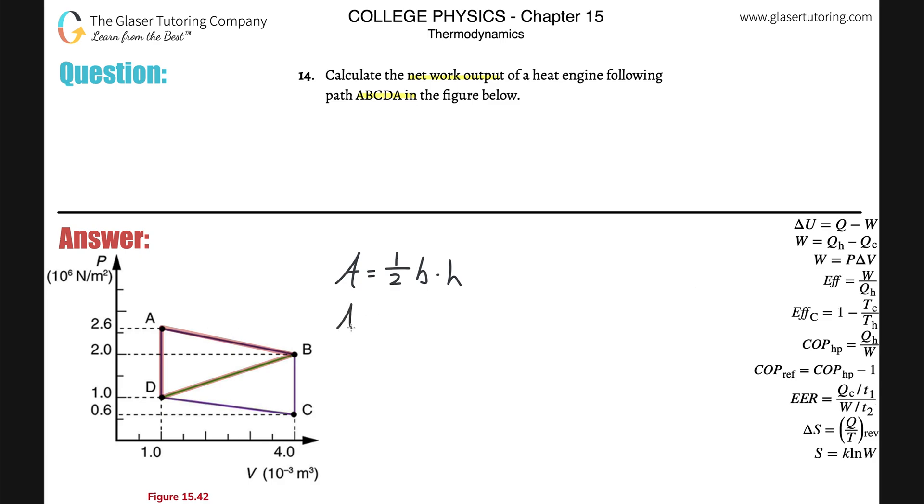And therefore, the area of this will be one half times the base. It looks like the base here has a value of—it goes from one to 2.6, so that's going to be the difference between those which is 1.6, multiplied then by the height. So the height here is this dashed line, and it goes from a volume of one to a volume of four, so that's simply going to be three.